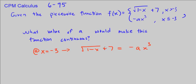So let's go ahead and plug in negative 3 into x. So we have the square root of 1 minus negative 3 plus 7 equals to negative a times negative 3 cubed.